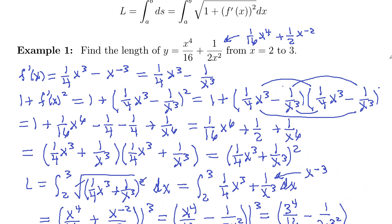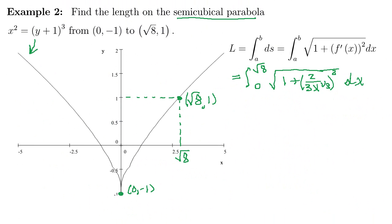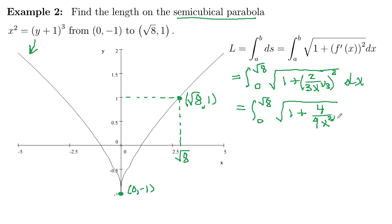Let's simplify a little bit. The integral from 0 to √8 of the square root of 1 plus 4/9 times x to the 2/3, dx. Squaring the 2 gives 4, squaring the 3 gives 9, and power to a power: 2 times 1/3 is 2/3. This integral is fairly involved — remember when you get these fractional exponents you need a common denominator, so this is kind of messy. Let's see if there's another way to do this problem.